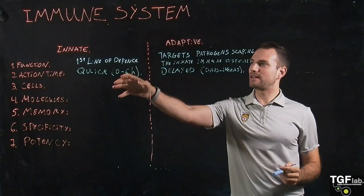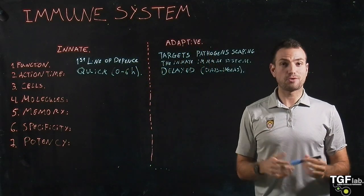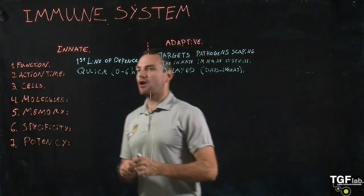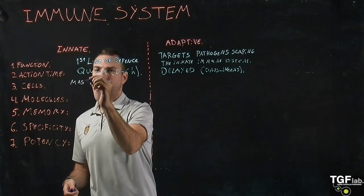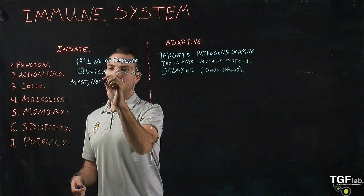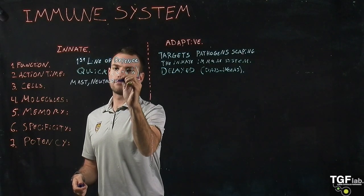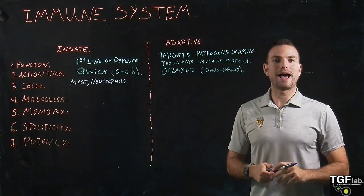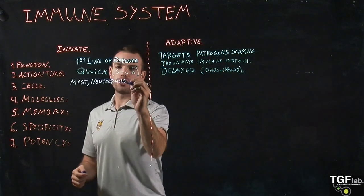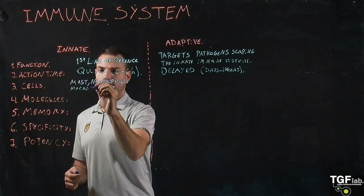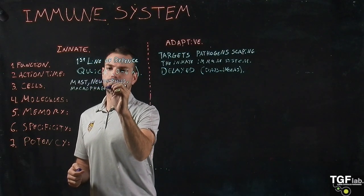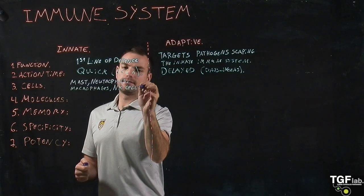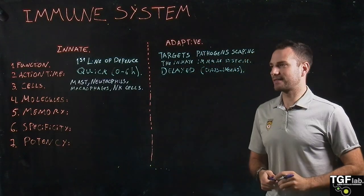The cells used in the innate and adaptive responses are also different. In the innate immune system, we have mast cells and neutrophils — the neutrophils are the first cells recruited at the site where pathogens are detected. We also have macrophages and natural killer cells, or NK cells.